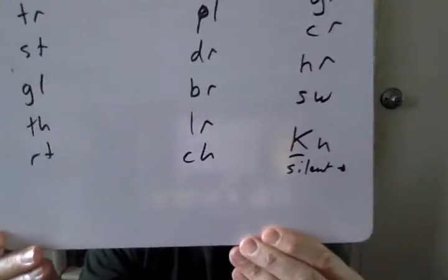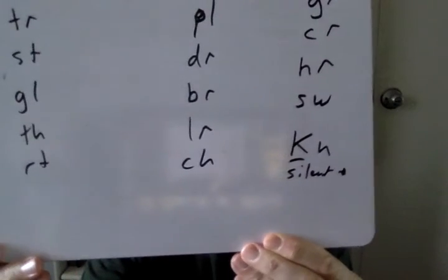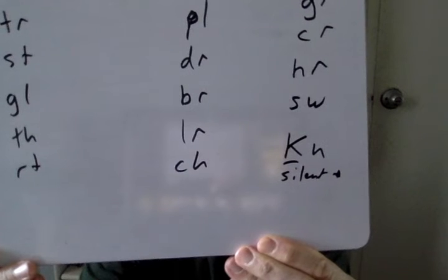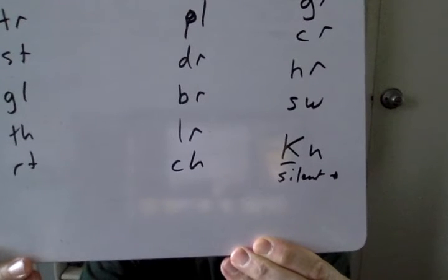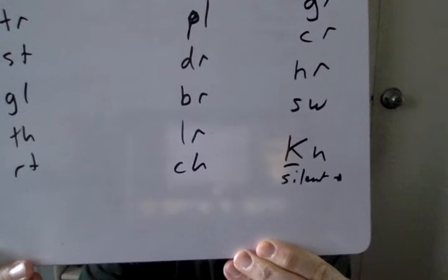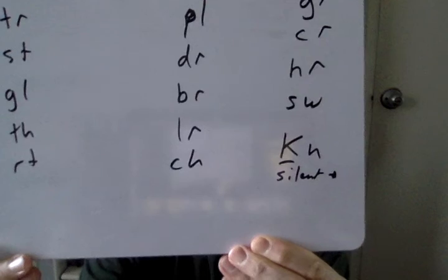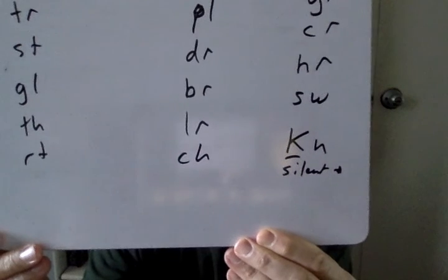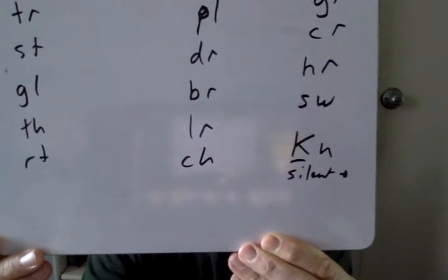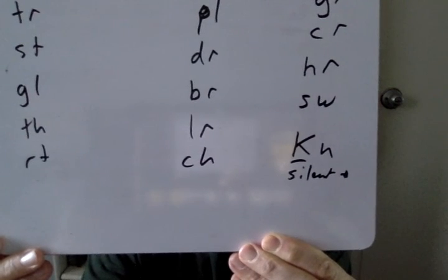And then, lastly, 'kn.' When you have a kn, like 'know' — k-n-o-w — the K is silent. So that's something to remember: on a kn blend, the K is silent. For example, 'know,' k-n-o-w. Just say 'know.' You don't say 'kno.'